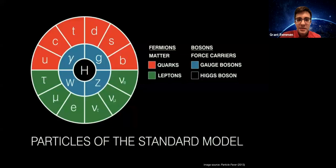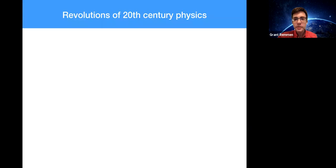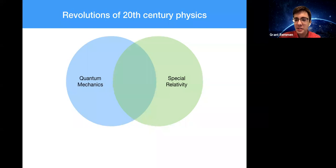An example of a quantum field theory we're all familiar with is the standard model — the particle theory that makes up basically everything you interact with in everyday life, including the quarks, the leptons, and the gauge bosons that hold everything together. Quantum field theory really came out of the major revolutions of 20th century physics: quantum mechanics, the laws of the very small, and special relativity, the laws of the very fast, coming together in this beautiful framework of understanding nature as sets of quantum fields interacting with each other.